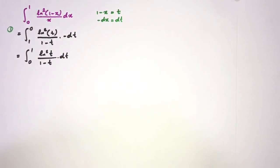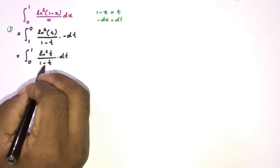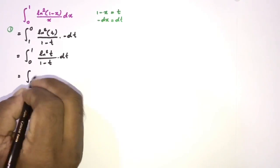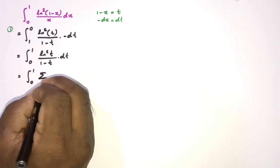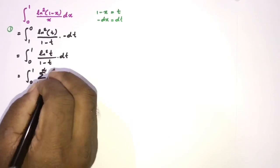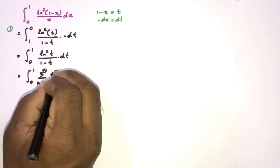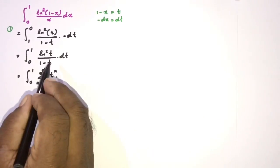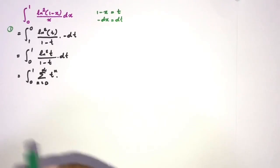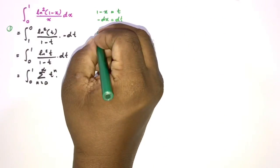We know that 1/(1-t) can be represented as an infinite power series: Σ(n=0 to ∞) tⁿ. So we have Σ(n=0 to ∞) tⁿ · ln²(t). In this method I am going to use differentiation under the integral sign.